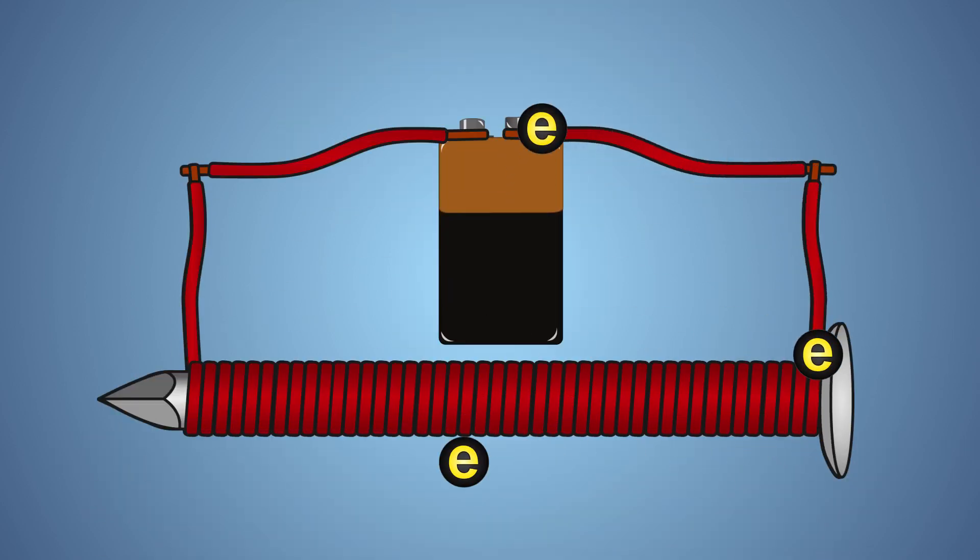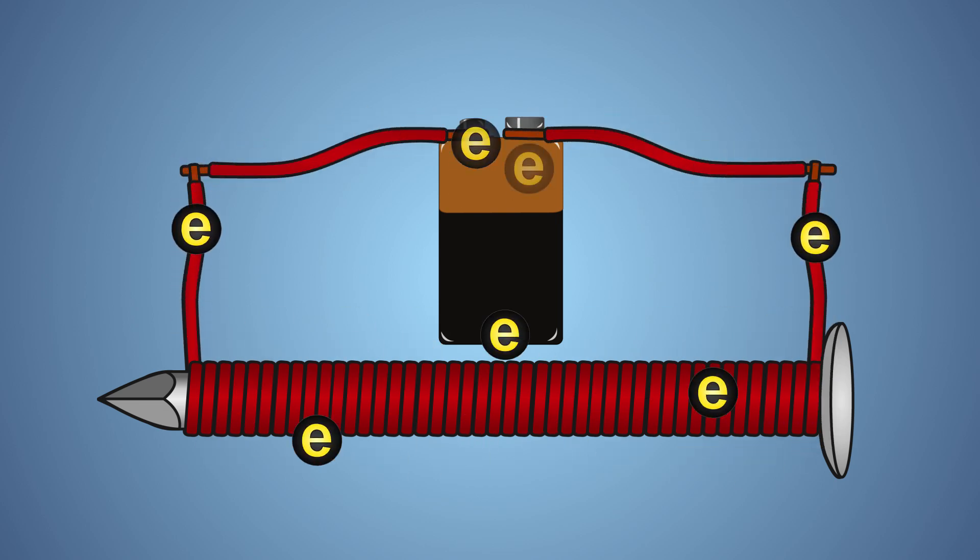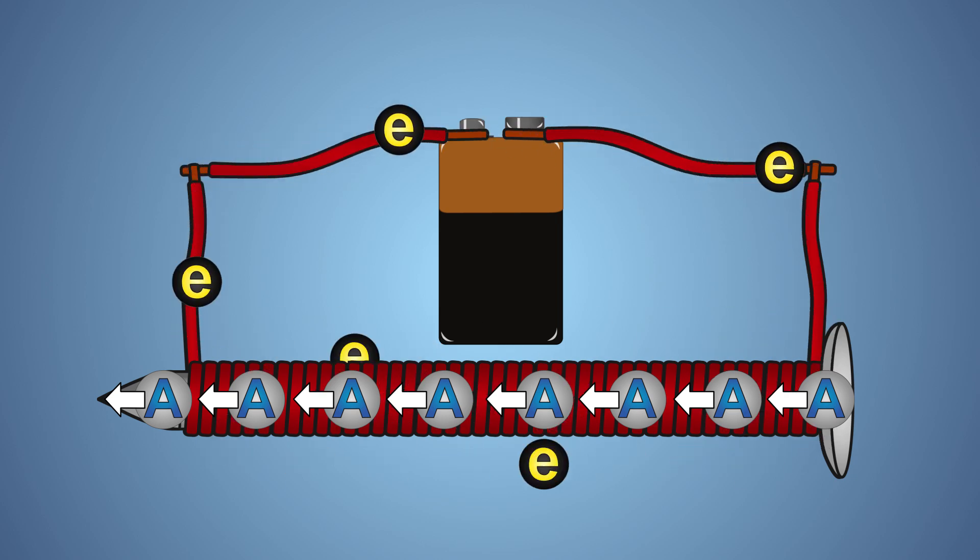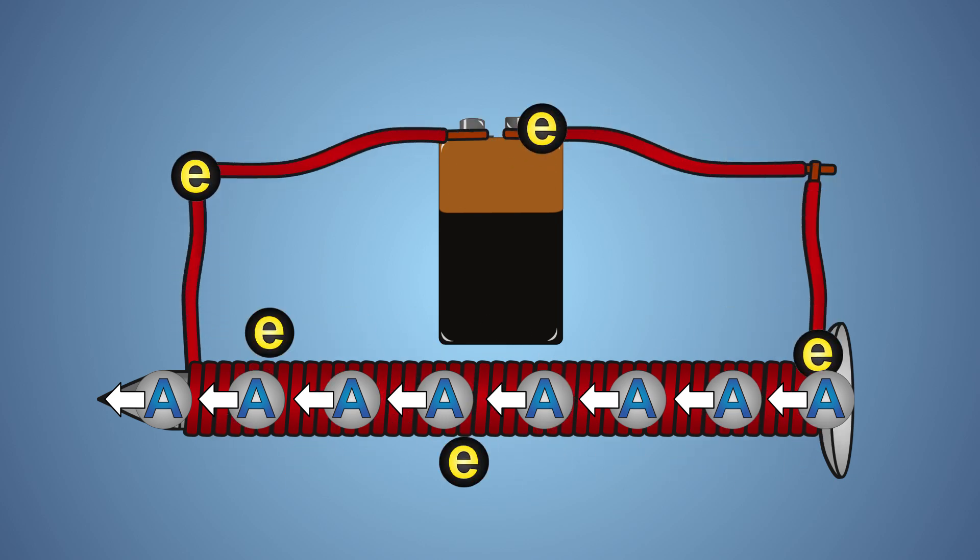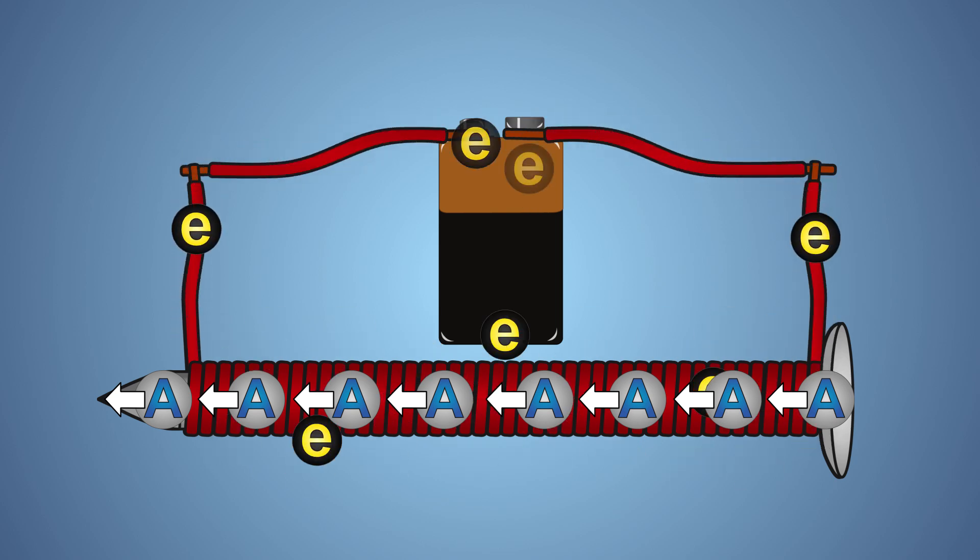In our experiment, the current or flow of electrons traveling through a wire wrapped around our nail generates a magnetic field which aligns the atoms that make up our nail, turning our non-magnetic nail into an electromagnet. The direction of the magnetic field in our electromagnet can be figured out by using the right-hand rule.